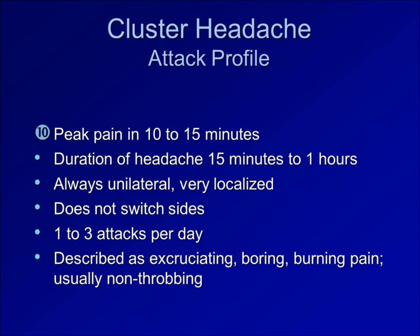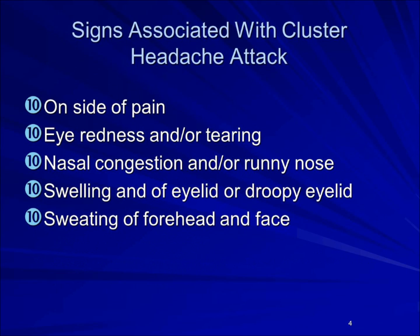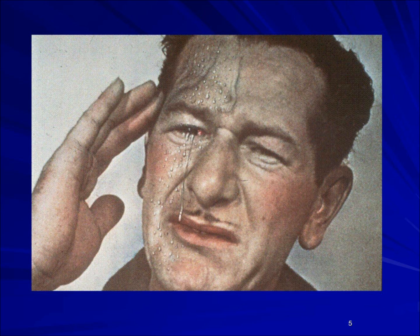During the headache, a patient is very restless. Other typical symptoms present in almost every patient are on the same side as the pain: redness of the eye, tearing, congestion or runny nose, swelling of the eyelid and droopy eyelid, and sweating on the forehead and face. All those symptoms are on the same side as the pain. You can see a patient showing where the pain is with one finger in the temple area, with red eyes, tearing, sweating on the same side, bulging veins in the forehead, and in terrible, severe pain.